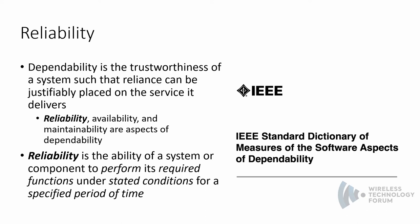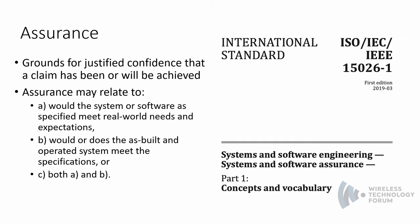These definitions come from the IEEE Standard Dictionary of Measures of the Software Aspects of Dependability. In addition, another term from my title — assurance — comes from ISO IEC IEEE 15026-1, called System and Software Engineering, Systems and Software Assurance, Part 1: Concepts and Vocabulary.